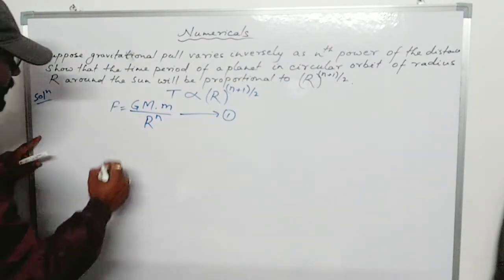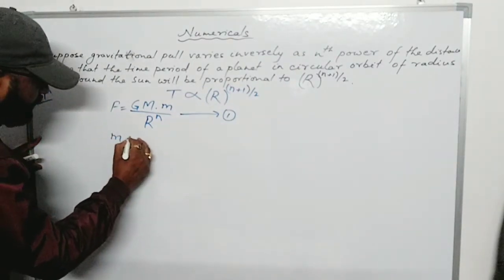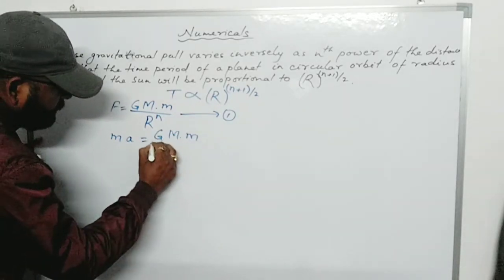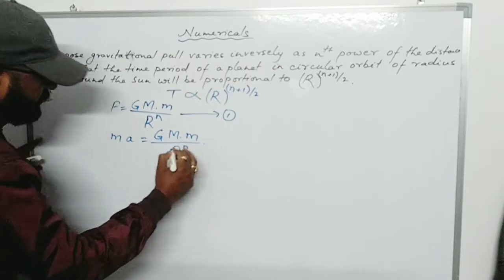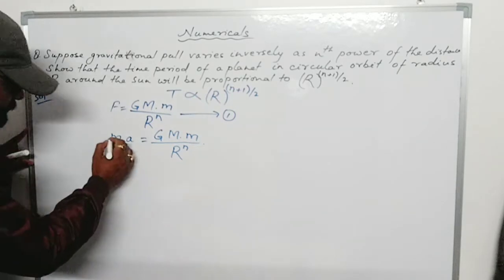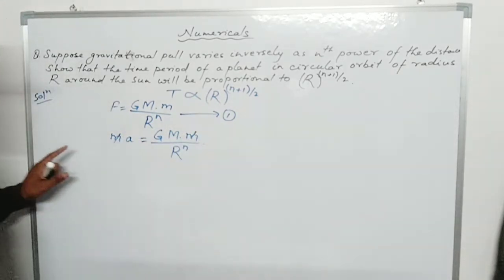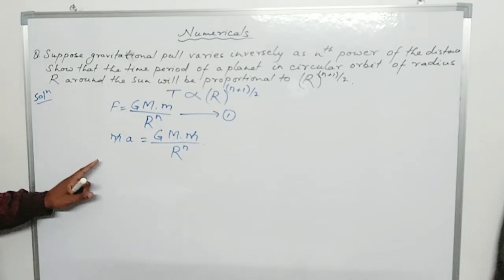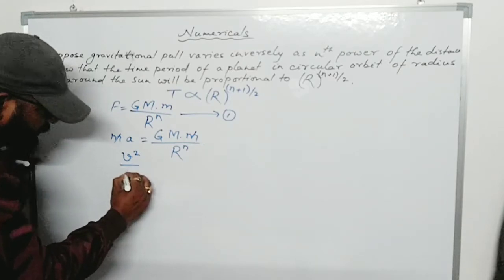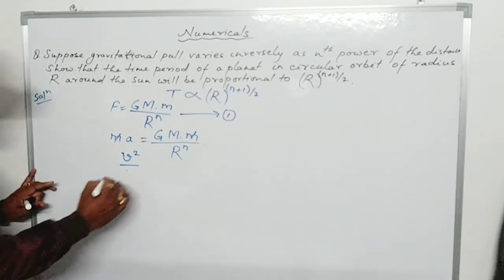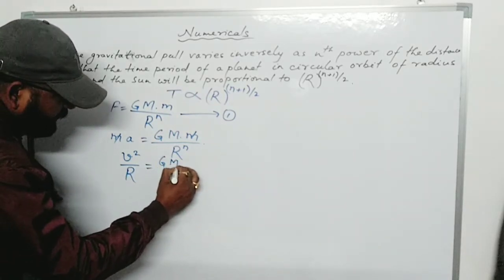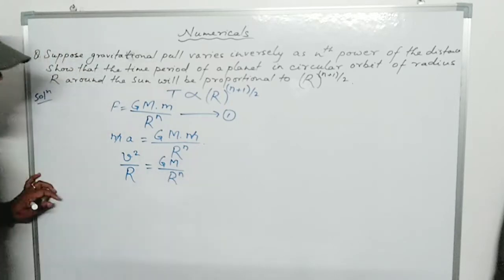Now we know that F = ma = GMm / r^n. The small m's cancel, and this is centripetal acceleration, whose value is v²/r. So v²/r = GM / r^n.